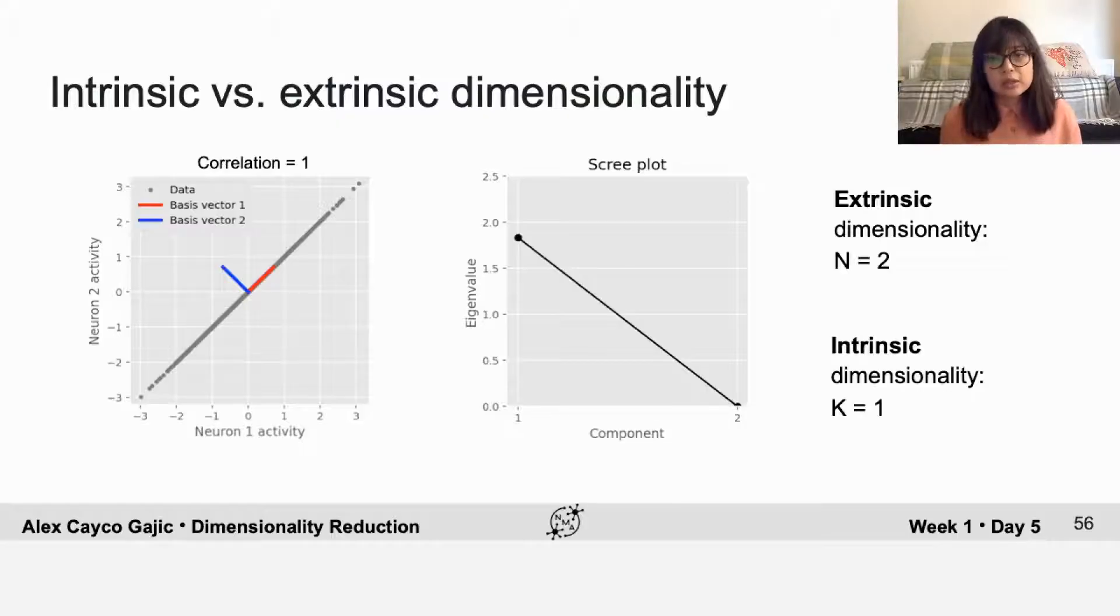You can also see this in the scree plot on the right. So the eigenvalue of the second component is exactly zero. That means that there is no variation in the data along the second basis factor.